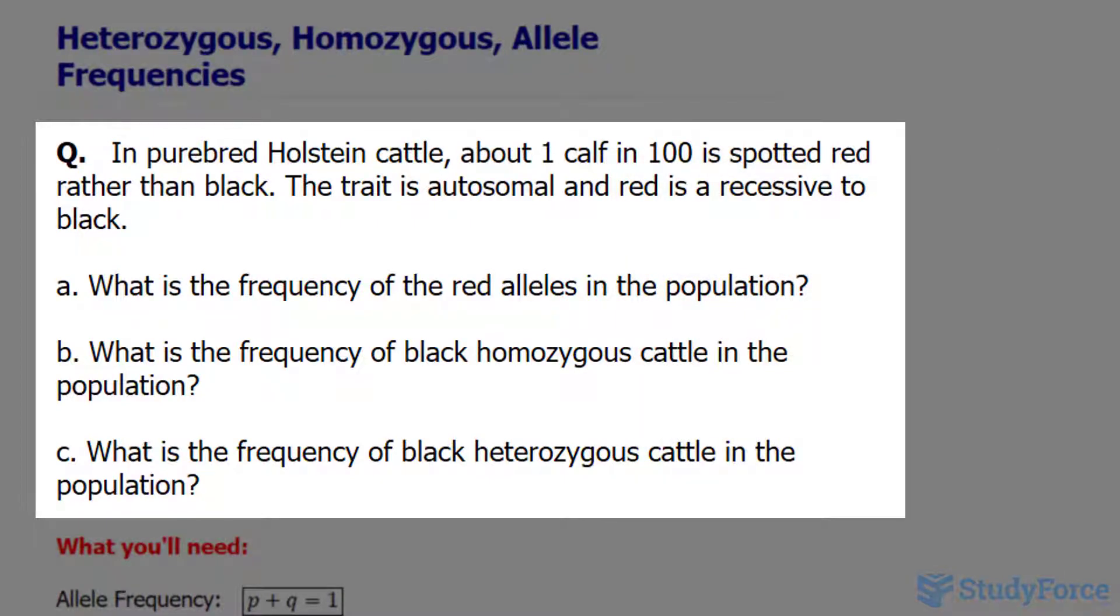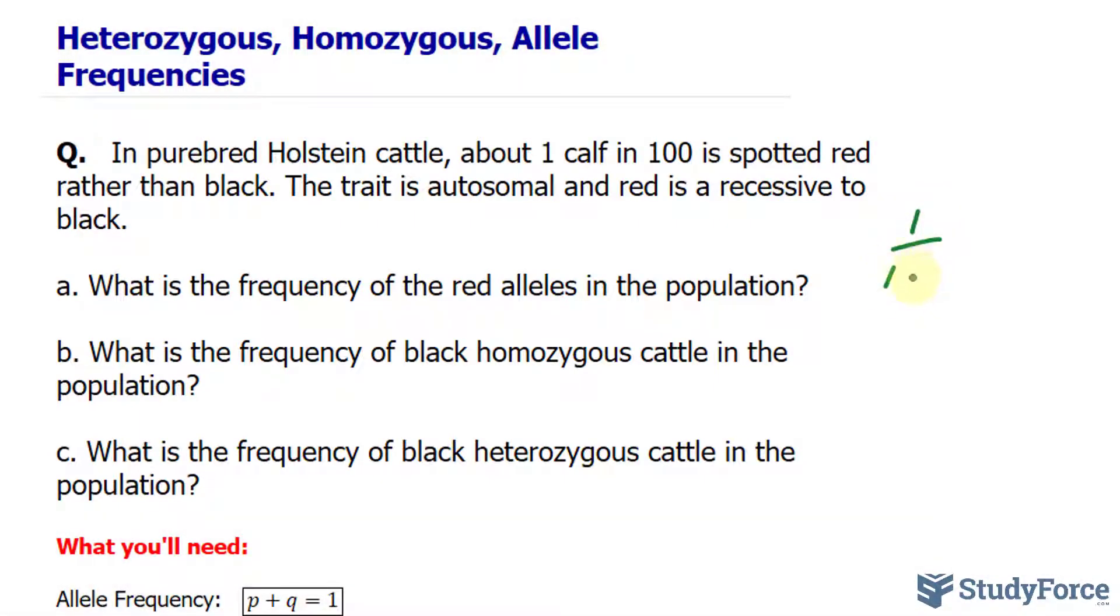Autosomal meaning that this gene occurs on a nonsex chromosome. In question A, what is the frequency of the red alleles in the population? So first of all, we'll say that one out of 100 calves are born with these red spots. And because this is an autosomal recessive trait, that means that the cow must have inherited a recessive allele from both of its parents.